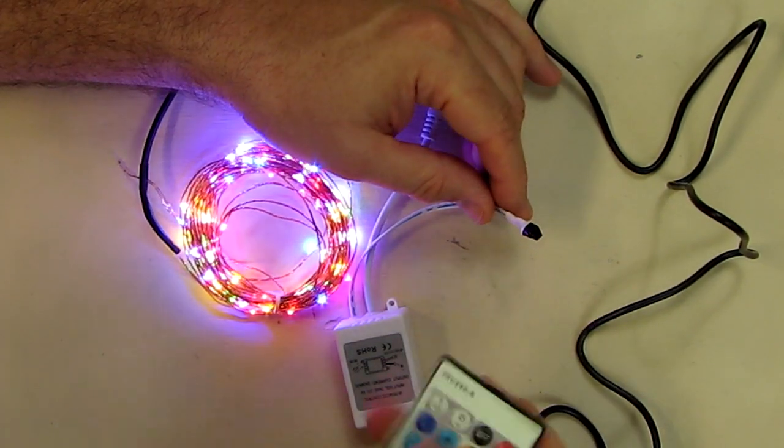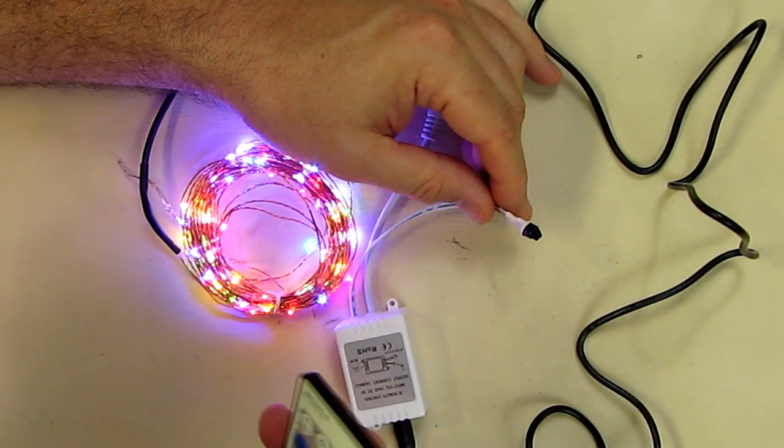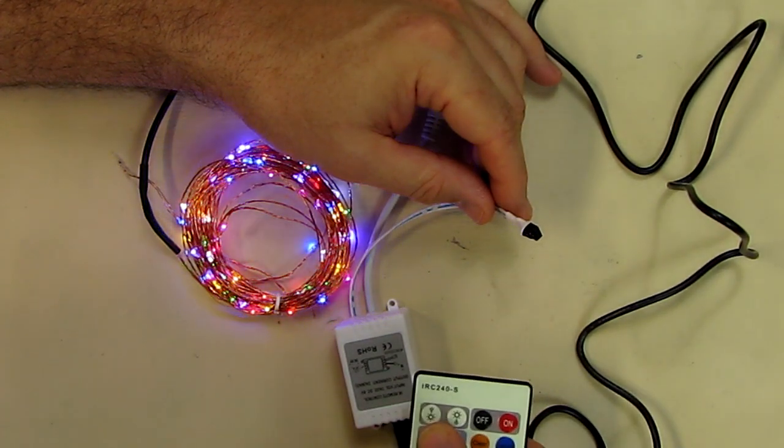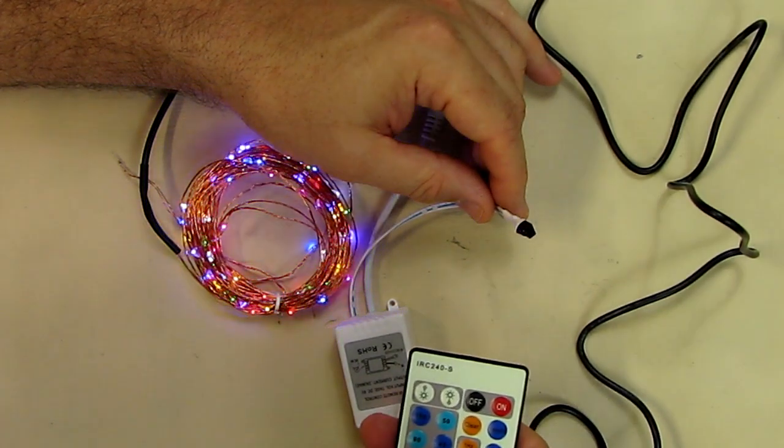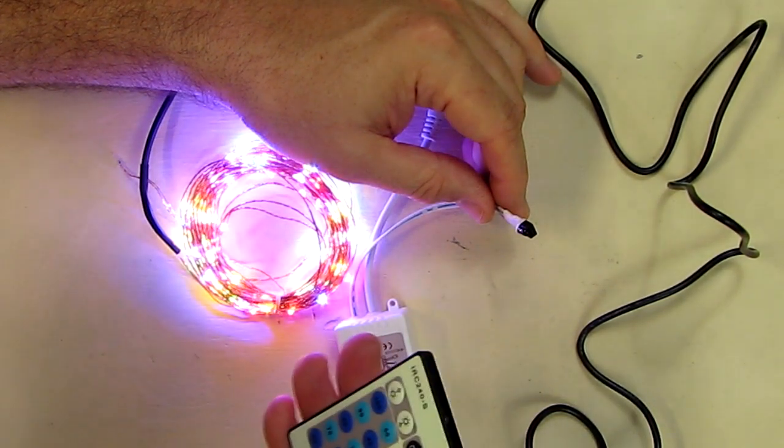This will put it to full brightness. And then you have these buttons on the left here and they all do something slightly different. They're labeled 30, 70, 10.